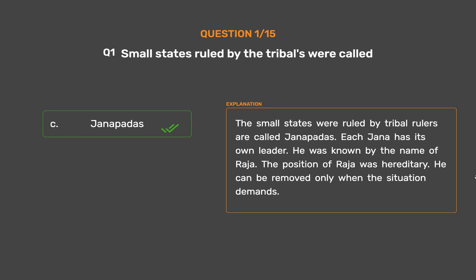The small states ruled by tribal rulers are called Janpadas. Each Jana has its own leader, who was known by the name of Raja. The position of Raja was hereditary and he could be removed only when the situation demanded.